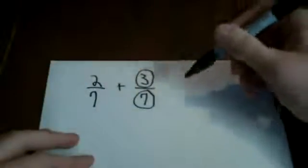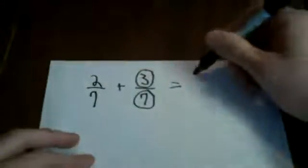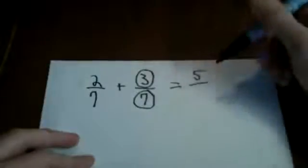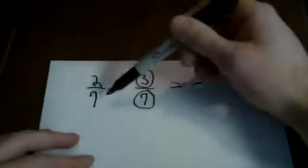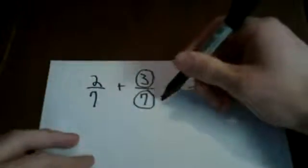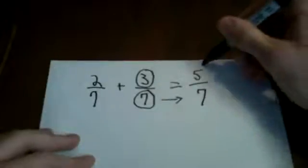So to add these two fractions, what you would do is take your numerators, whatever they are, and add them together. So 2 plus 3 equals 5. Then with your denominator, it's a little bit different. With your denominators, you will always just slide the denominator over. So it's going to be 5 7ths as your answer.